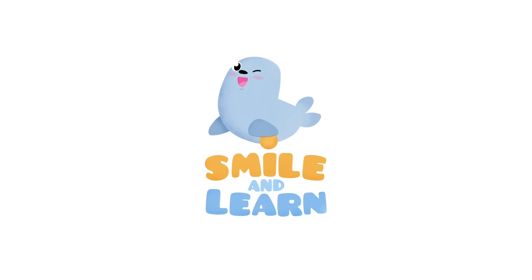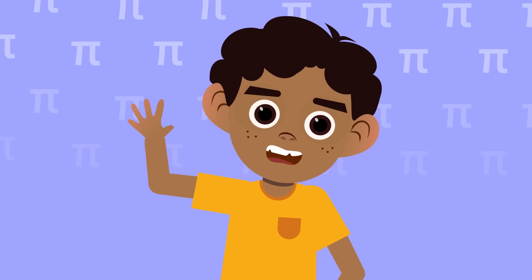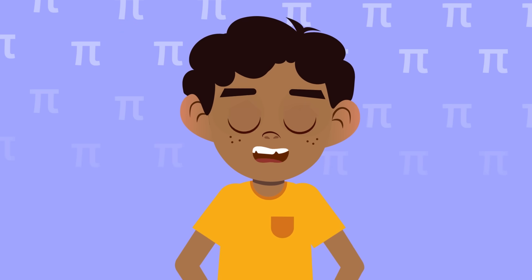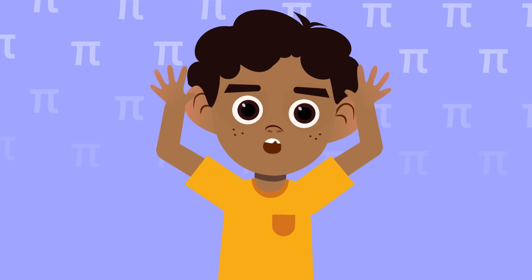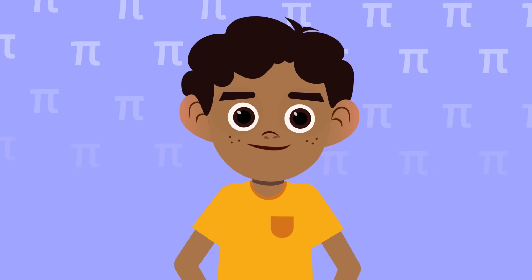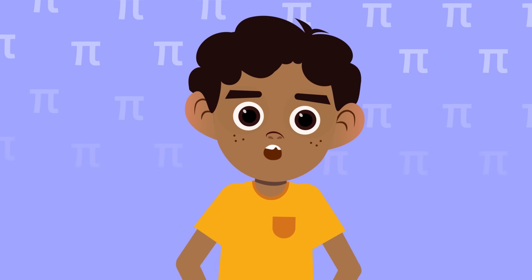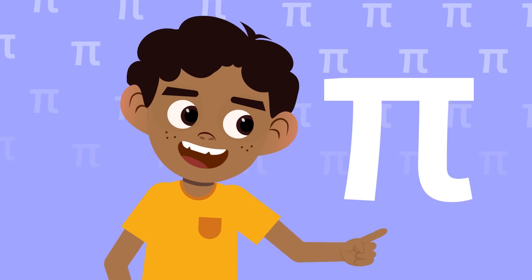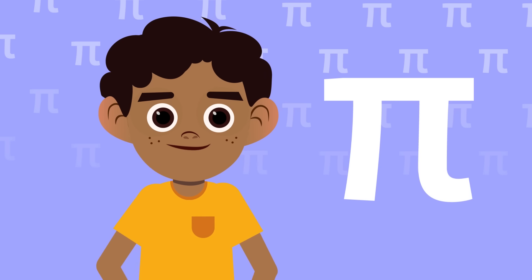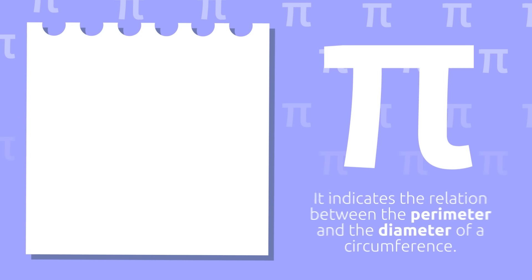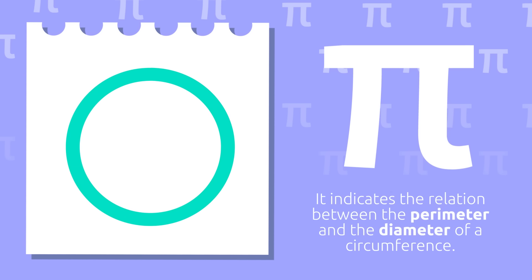Hello friends! Today we'd like to introduce a very famous number found in all circumferences and circles you see around you. It's number pi. Number pi is a mathematical constant which indicates the relation between the perimeter and the diameter of a circumference.